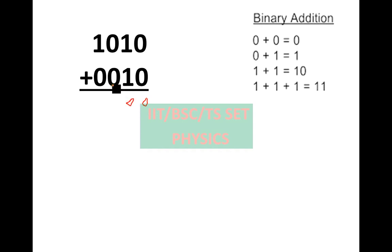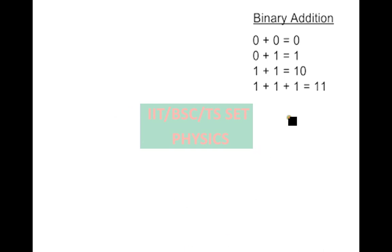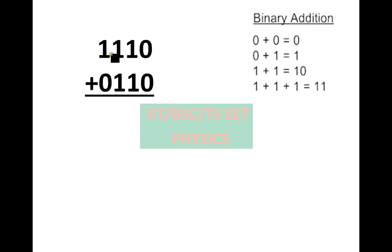We carry 1. Next, 1 plus 0 is 1. Then 1 plus 0, that means 1. Next, 1 is 10. And your value is 1010. So our final value is 1010.